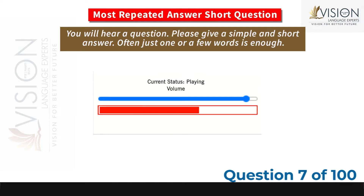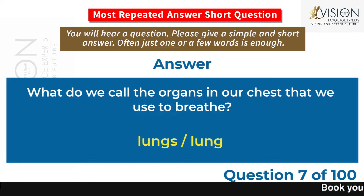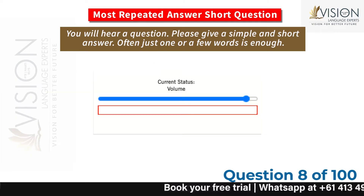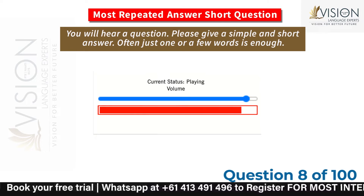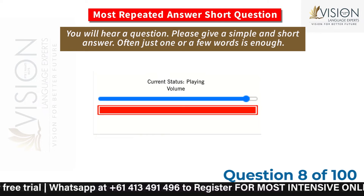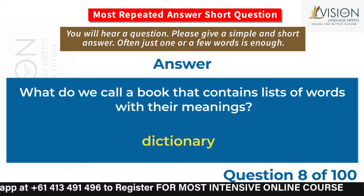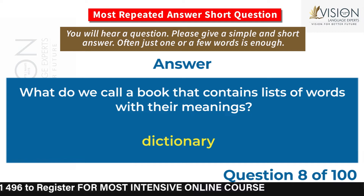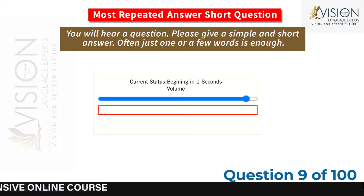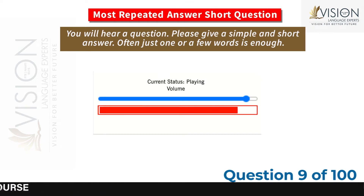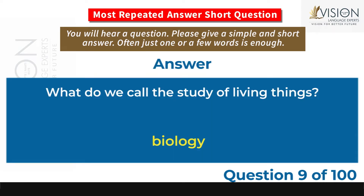What do we call the organs in our chest that we use to breathe? Lungs. What do we call a book that contains lists of words with their meanings? Dictionary. What do we call the study of living things? Biology.